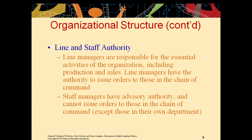Managers can be classified into two broad categories: line managers and staff managers. Line managers are the ones employees report to — they have accountability, responsibility, and the authority to evaluate, give feedback, and decide and determine the prospects of the candidate. Staff managers, on the other hand, have advisory authority — they are not decision-making managers and cannot issue orders to those in the chain of command, whereas line managers have the authority to issue orders to those in the chain of command.